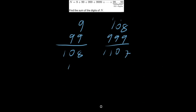Let's try one more: plus 9999, which gives 11106. These are giving us really ugly numbers. Every time we add a 9-digit number, we have to do a lot of work, because 9s aren't a clean number to add — there's a lot of carrying involved.